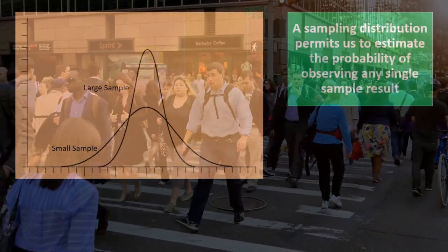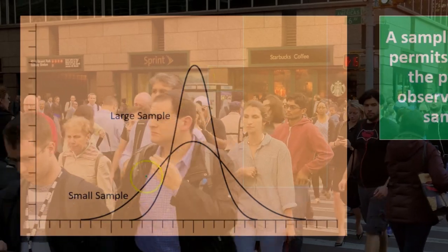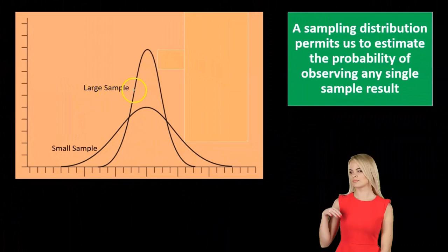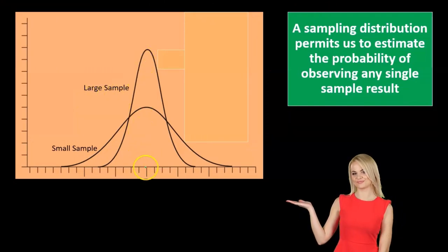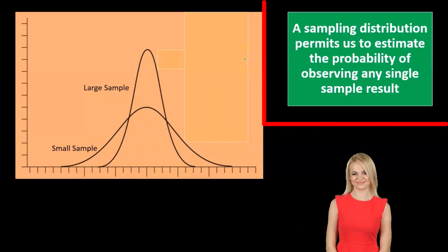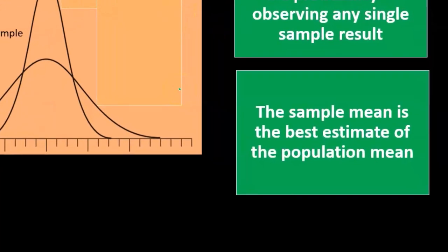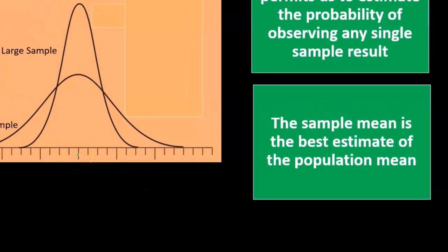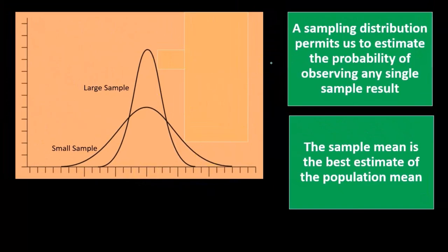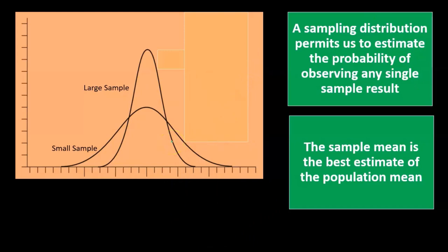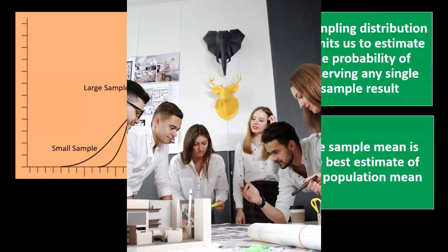With a larger population the curve will tend toward a taller, narrower shape; with a smaller sample the curve will be wider. The larger sample gives more precise data around the mean. A sampling distribution permits us to estimate the probability of observing a single sample result. The sample mean is the best estimate of the population mean, and we can estimate the probability of any single sample result occurring using our standard deviation methods.